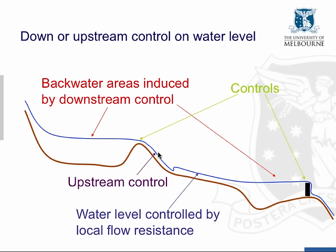We can also see a section of supercritical flow downstream of the crest of this riffle or high point in the bed, and likewise supercritical flow in that region. In those areas it's an upstream control, because you can't get upstream propagation of waves — the flow velocity at supercritical flow is faster than the wave velocity. So the water level is controlled by the upstream control. And here we have the hydraulic jump. It would be good for you to work through that yourself to identify these various influences and determine whether a water level is controlled by local flow resistance, a downstream control, or an upstream control.